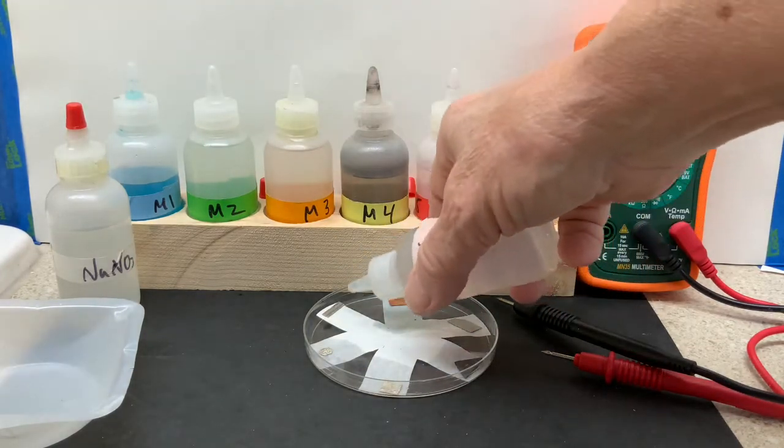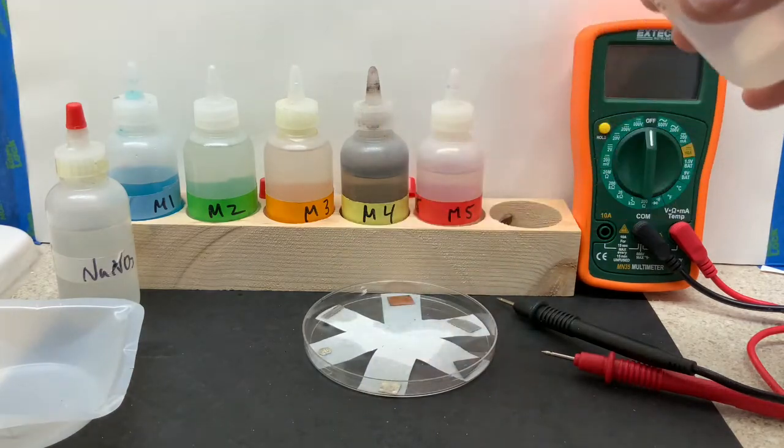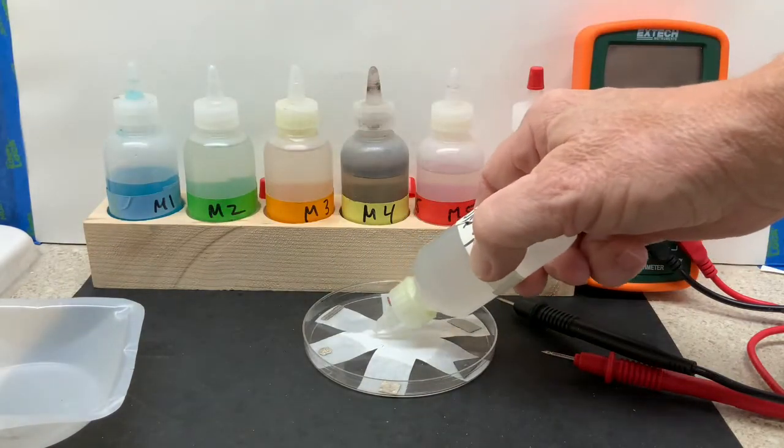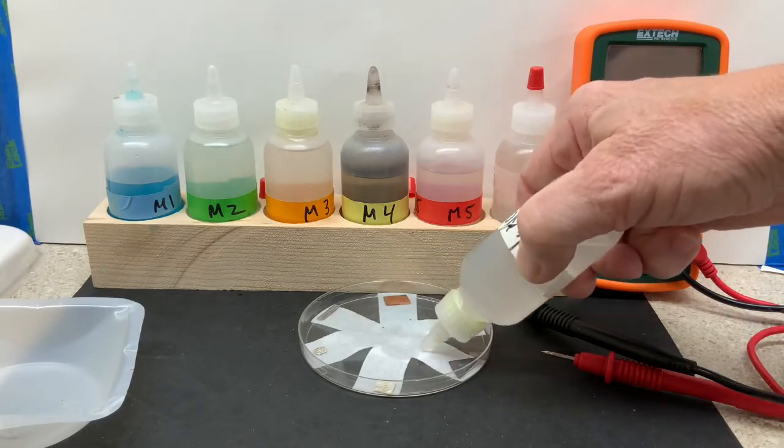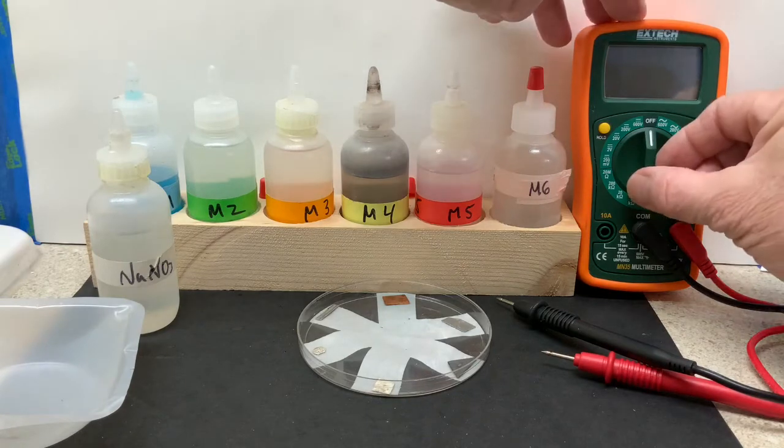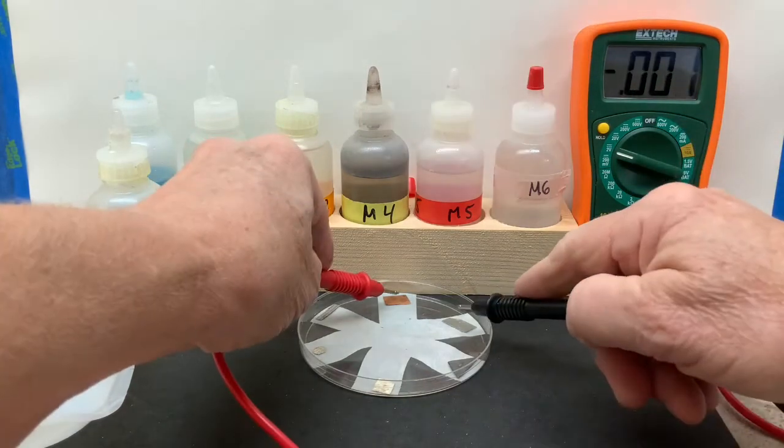Notice that one drop is used; it will bleed towards the center. We don't want it to go all the way to the center. Then the salt bridge sodium nitrate will be filled in to connect all of the six half-cells. The voltmeter is turned on to two volts.